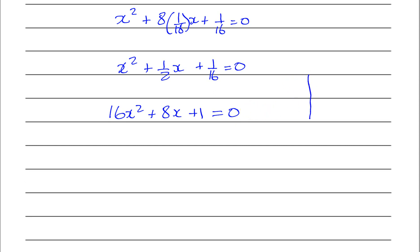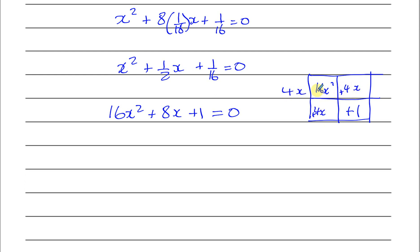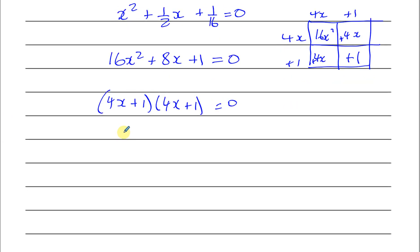Let's see if this factorizes. Two numbers that multiply to give 16 and add to give 8 — that's 4 and 4. So you get 4x and 4x, and you can see this is a perfect square: 4x plus 1 times 4x plus 1 equals 0. It makes sense that it's a perfect square since there's one repeated solution. So x equals minus one quarter.